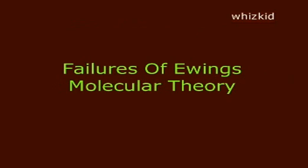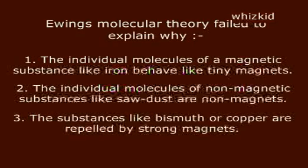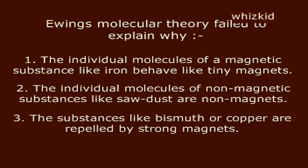Failures of Ewing's Molecular Theory: Ewing's Molecular Theory failed to explain why the individual molecules of a magnetic substance like iron behave like tiny magnets, why the individual molecules of non-magnetic substances like wood are non-magnets, and why substances like bismuth or copper are repelled by strong magnets.